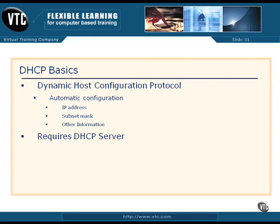For DHCP to work, you must have a DHCP server on the same subnet as the user's computer, because that computer will broadcast when it starts up. If the client is not on the same subnet as the DHCP server, you'll need a relay agent. The relay agent sees that broadcast and passes the request through a router to the DHCP server, proxying the communication back and forth.